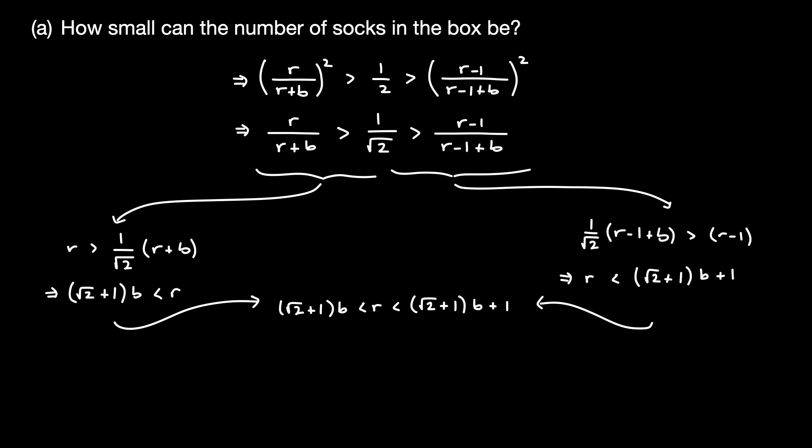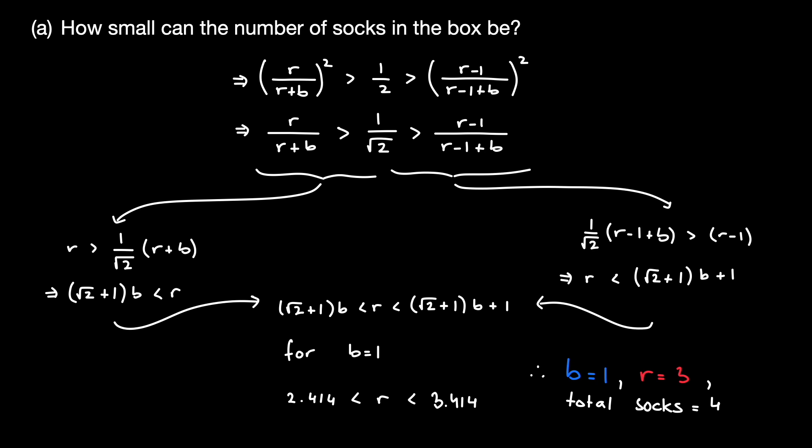Now that we have this combined inequality, let's try plugging in some values. For example, let's say the number of blue socks is equal to 1. In this situation, r is bounded between 2.414 and 3.414. Since we are solving an integer problem where the number of red socks cannot be a decimal, the only possible value of r is 3 when b equals 1. Therefore, the total number of socks is b plus r, which is 1 plus 3, which is 4. This gives us a valid solution for part A.